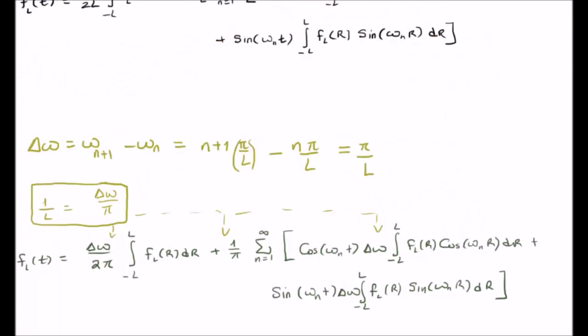Now, in order for us to go from the discrete Fourier series to Fourier integrals, like I said, we need to discuss the discrete component, which is, of course, omega.